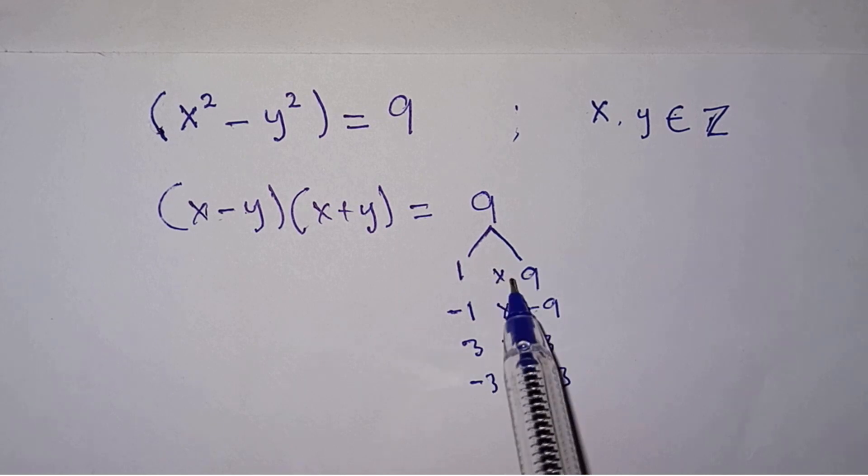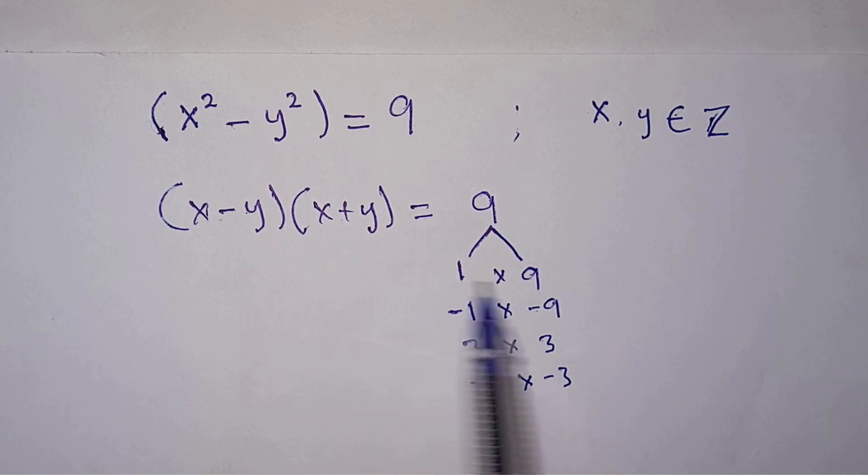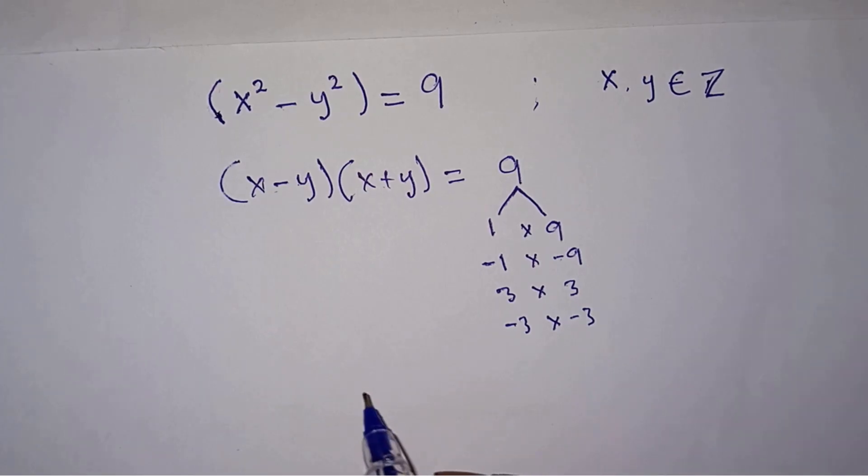So from the first factors, it means that when x minus y is 1, x plus y is 9 in that order. So we can have two cases out of this. The first one: